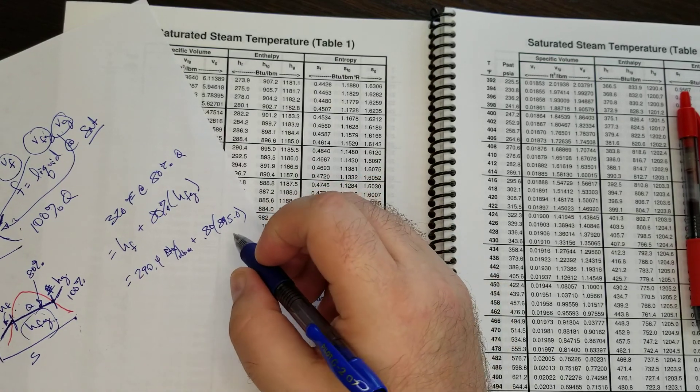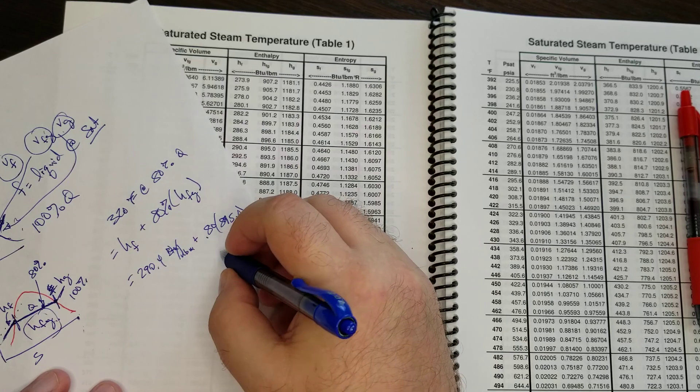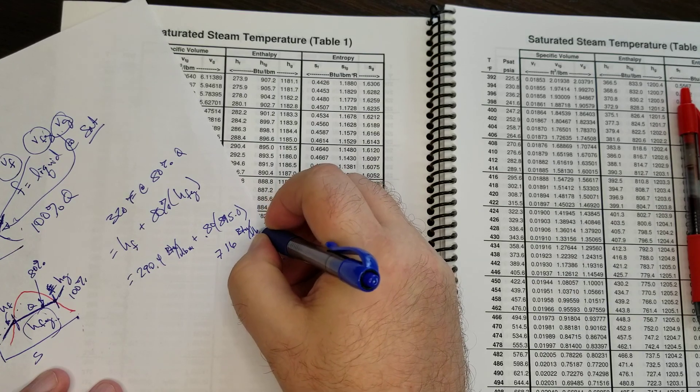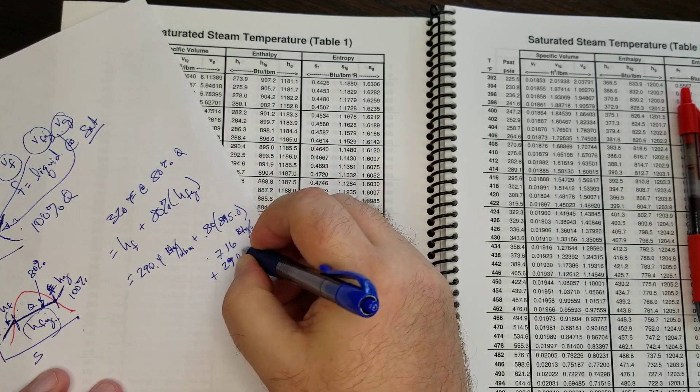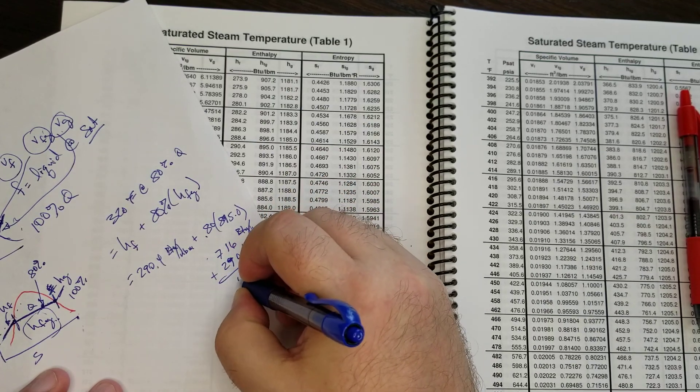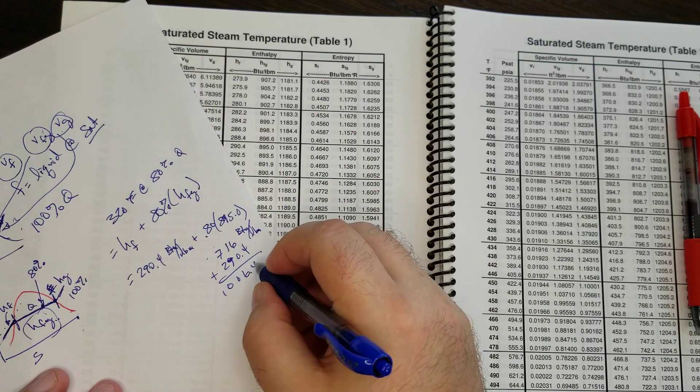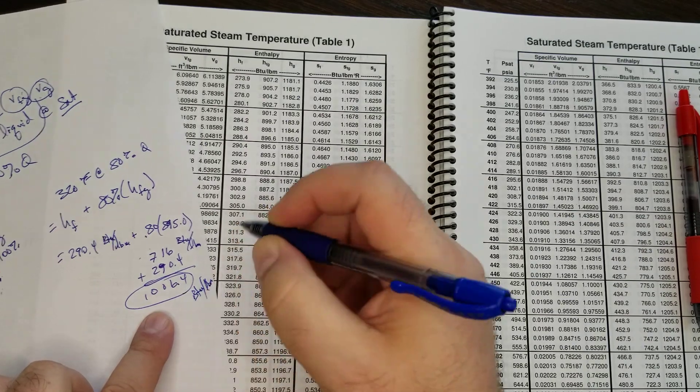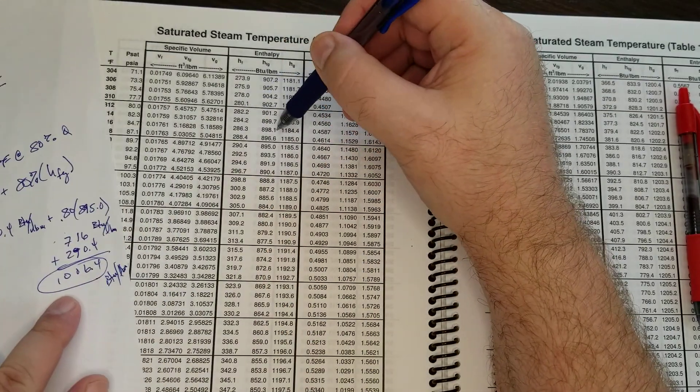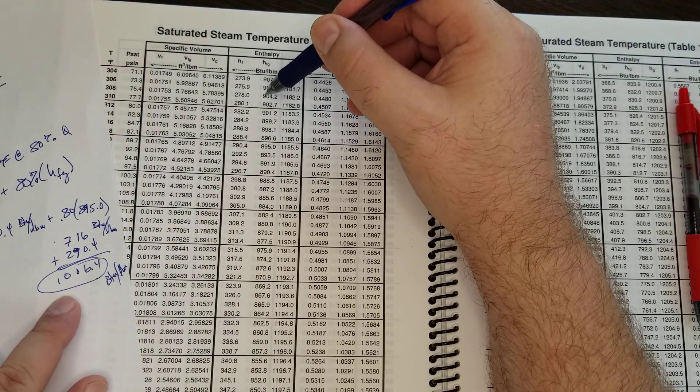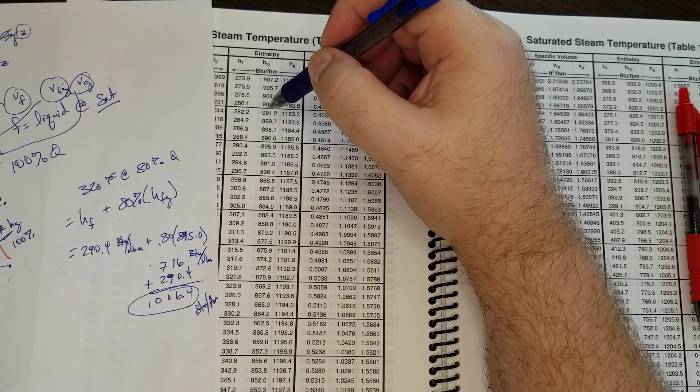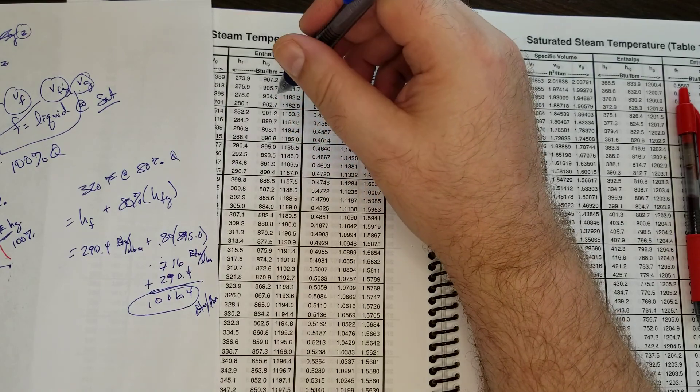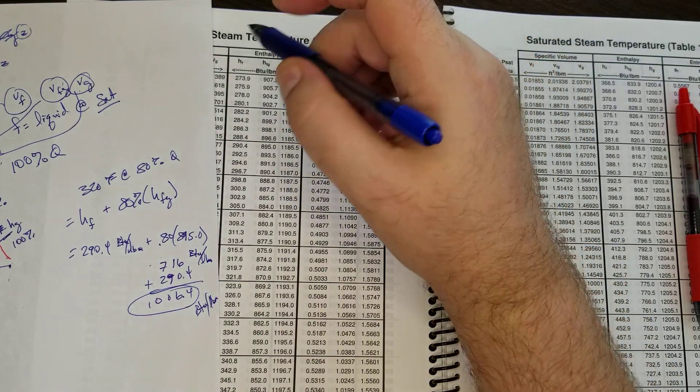And I just realized the only thing I'm not prepared with here is a calculator. So 80% of this. Hey Google, what's 80% of 895? 716 BTUs per pound mass, plus 290.4. So our enthalpy is 1006.4 BTUs per pound mass. I hope that better shows you what these columns mean, what this H sub FG means, and how to use it.